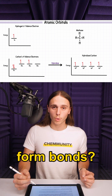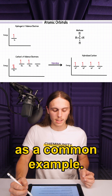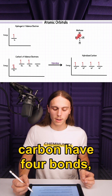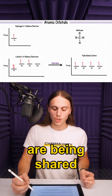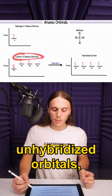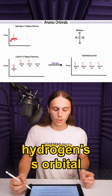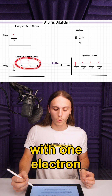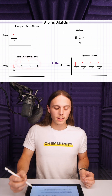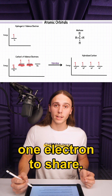But how do these atomic orbitals form bonds? Let's use methane as a common example. The goal is to make carbon have four bonds where its electrons are being shared with hydrogen. But if we look at the unhybridized orbitals, one electron in hydrogen's s orbital can't perfectly bond with one electron in the atomic orbitals of carbon, since only two orbitals in carbon only have one electron to share.